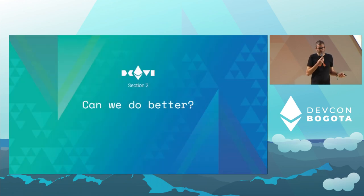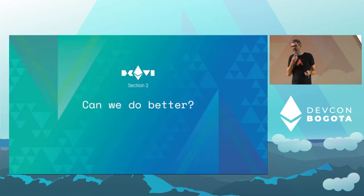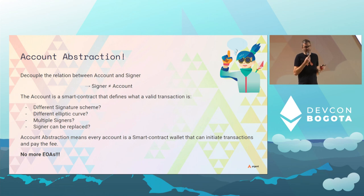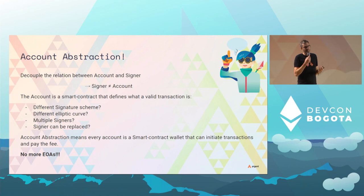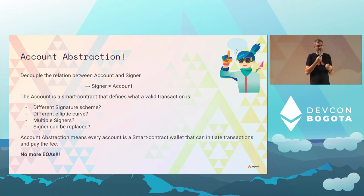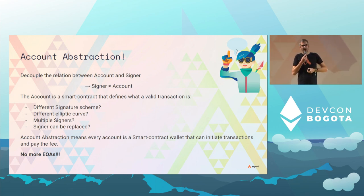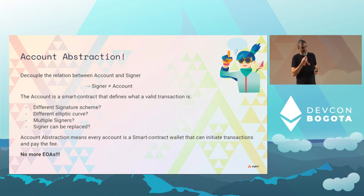Do we really expect the next billion users to be able to manage that single secret at all cost? We're pretty convinced the answer is no. Fortunately, we can do better — there's something called account abstraction. The idea is to decouple the relation between the signer and the account. With account abstraction, every account is a smart contract that can contain its own logic — for example, a different signature scheme, a different elliptic curve, multiple signers, or the ability to rotate your signer.